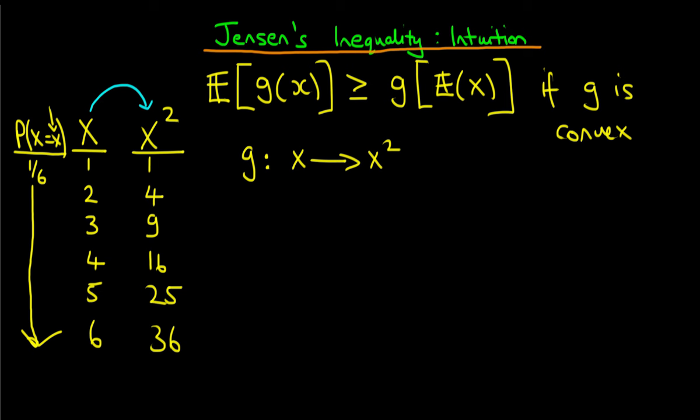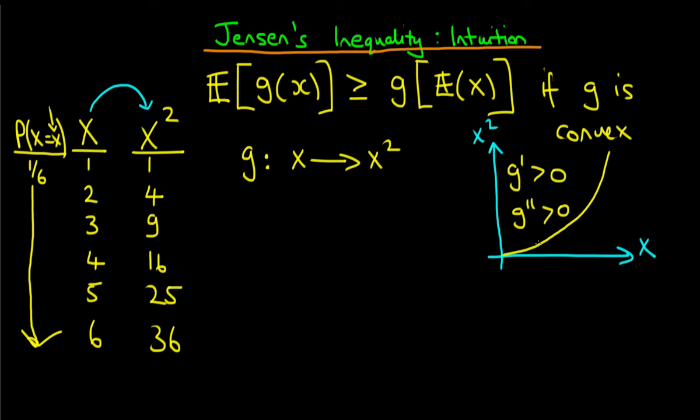We note that in this example, because of the particular form of g we've chosen — which is x squared — our function is upwardly sloping at an ever-increasing rate. So here we have that the first derivative of g is greater than 0, and the second derivative of g is also greater than 0. So this is a convex function. Because g is convex, we know we can use Jensen's inequality to answer our question.